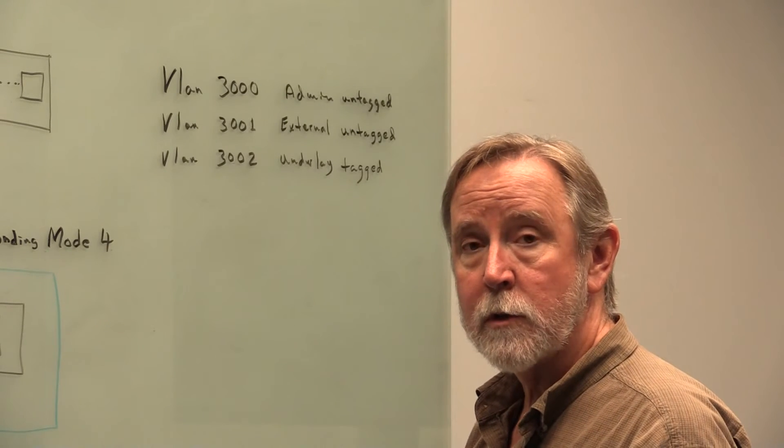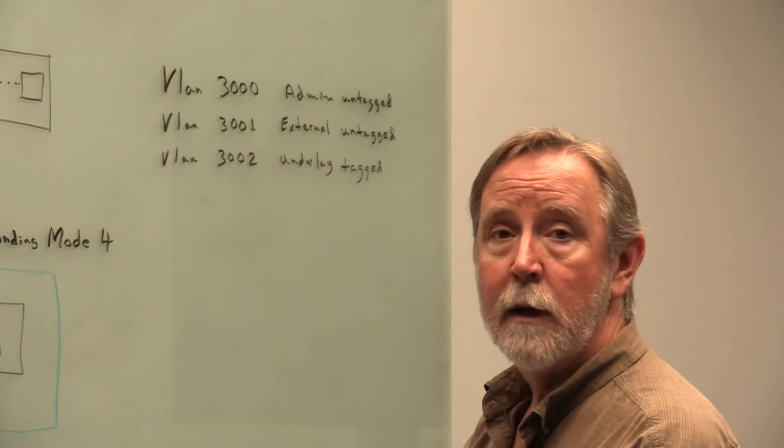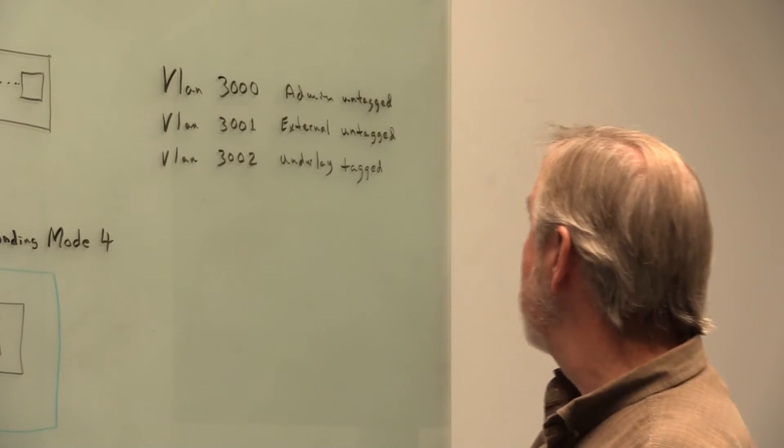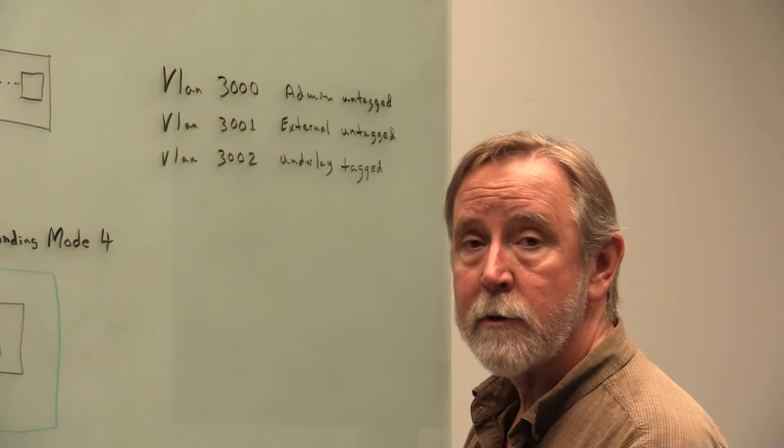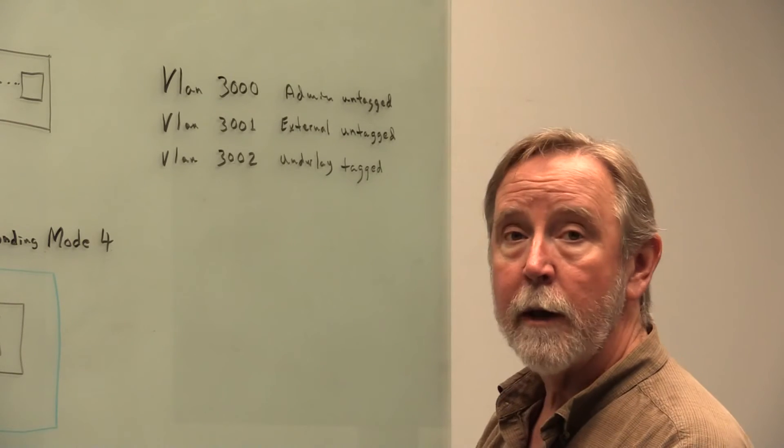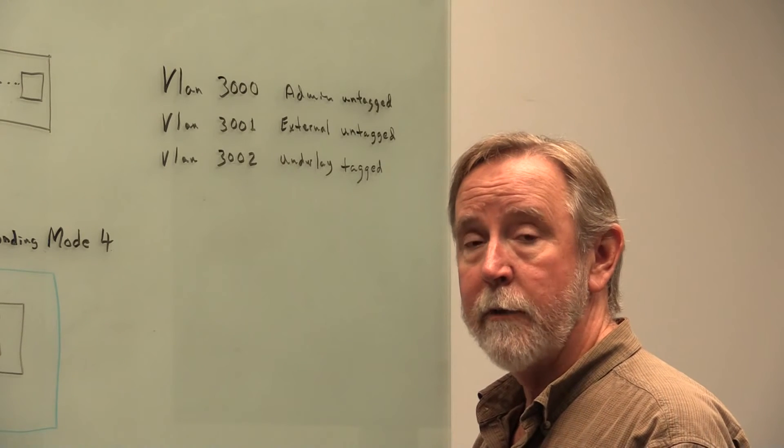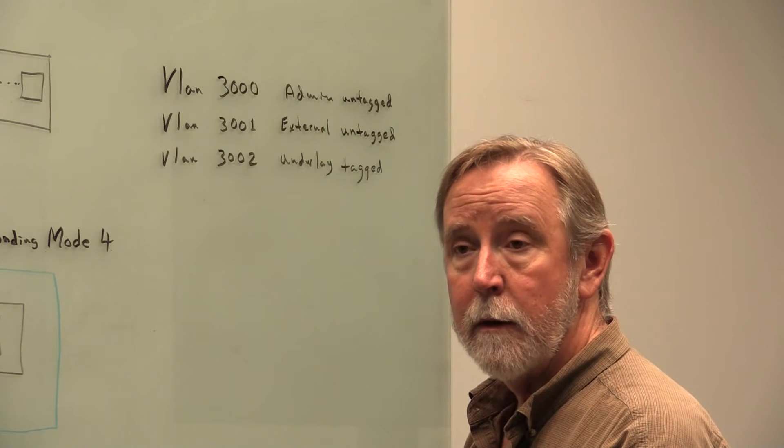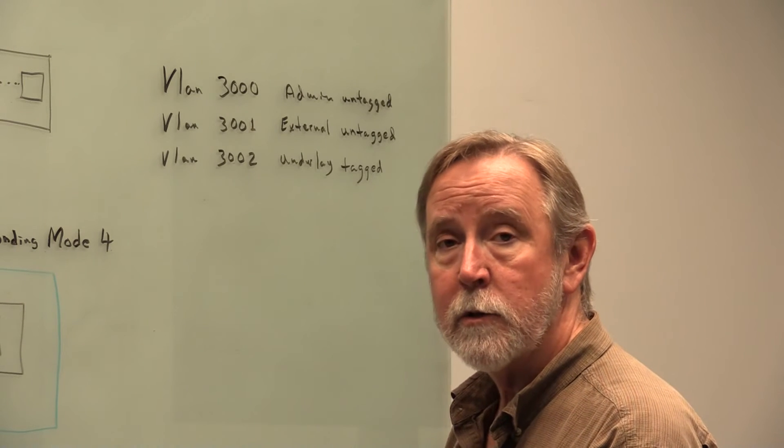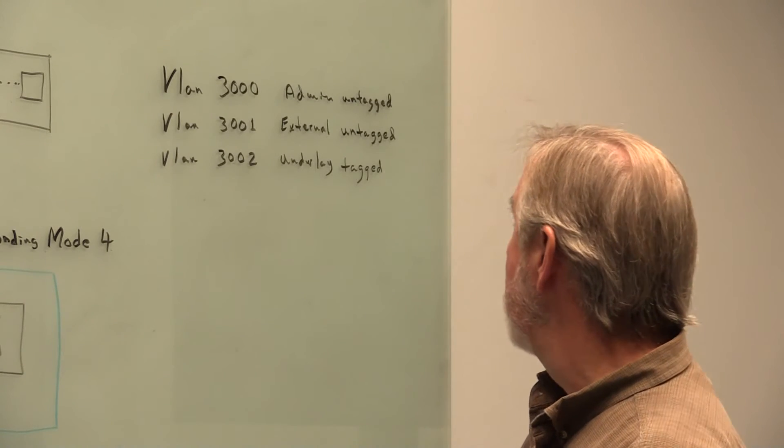Before you ever start the install process, you have to make sure that it has external access to the internet. And finally, we have a third VLAN 3002, which is called the underlay network. It's basically just a layer 2 network that's available for Triton services to apportion out network configuration.